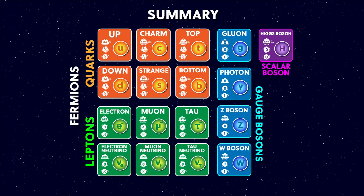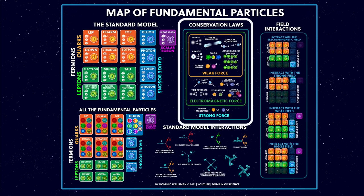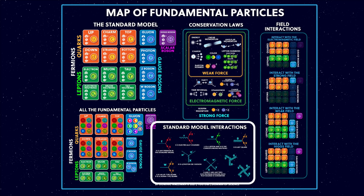So let's do a quick review of what we've covered so far. I've described the fermions, which contain the quarks and the leptons. We've also seen all the conservation laws, as well as all the field interactions for all of the particles. These standard model interactions at the bottom are a summary of all the possible particle interactions that are allowed by the standard model, which I looked at in my previous video on Feynman diagrams — go watch that if you'd like more details.